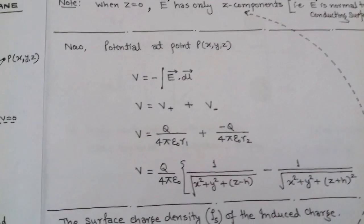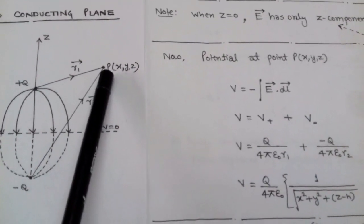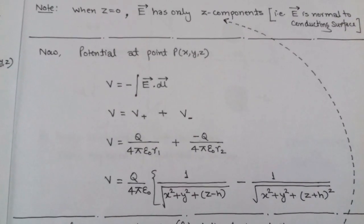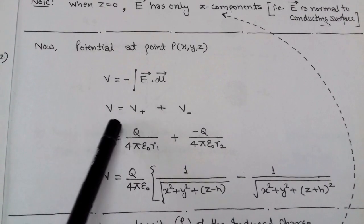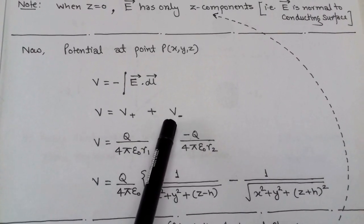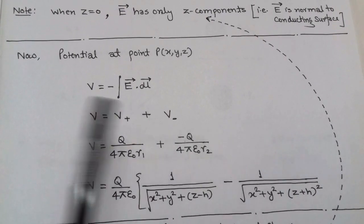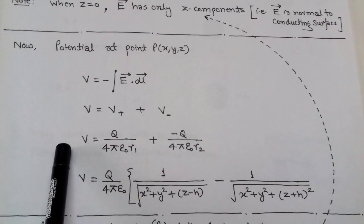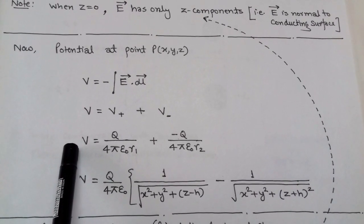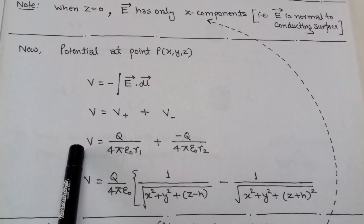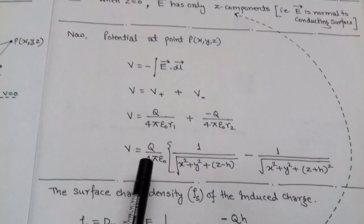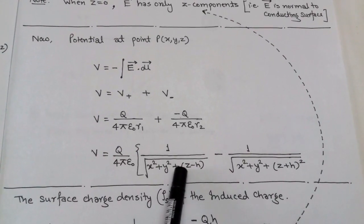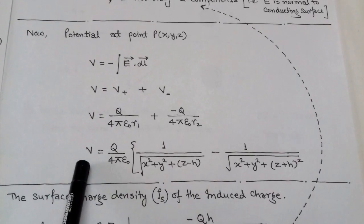We can also determine the potential at point P using V = −∫E·dl. The total potential is the combination of the potential due to the positive charge and the potential due to the image charge −q. Using V = q / (4π ε₀ r), where r1 and r2 are the magnitudes of distance vectors r1 and r2 respectively, we apply the formula and determine the potential.